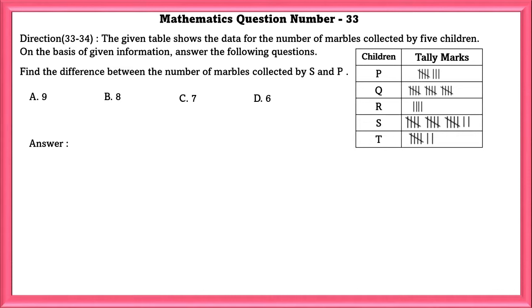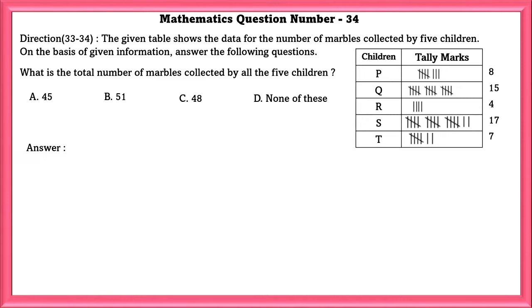Mathematics question number 33. The given table shows the data for the number of marbles collected by 5 children. On the basis of the given information answer the following questions. Find the difference between the number of marbles collected by S and P. The difference between the number of marbles collected by S and P is equal to 9. What is the total number of marbles collected by all 5 children? The total number of marbles collected by all 5 children is equal to 51.